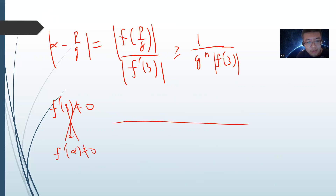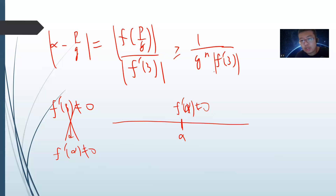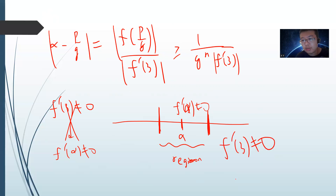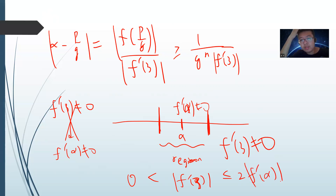We know that f'(α) must be non-zero, because α cannot be a multiple root — otherwise f would not be irreducible. Since f' is a continuous function, there must be a small region around α where f' is non-zero. So I can find a region such that |f'(E)| is at most 2|f'(α)|. I just make q large enough so that p/q is close enough to α, and this bound holds.